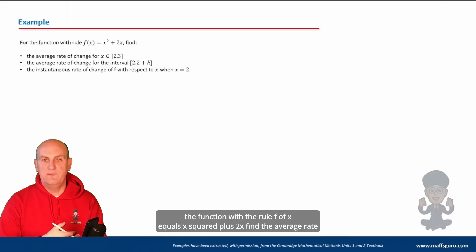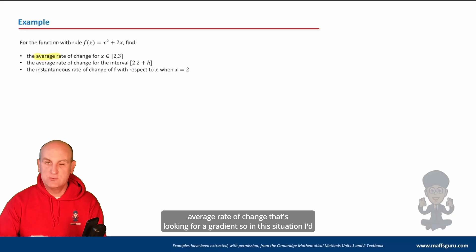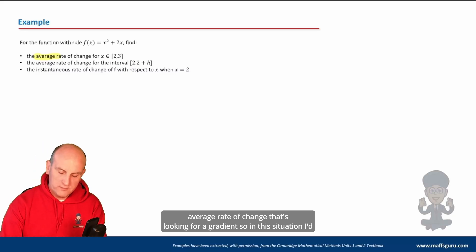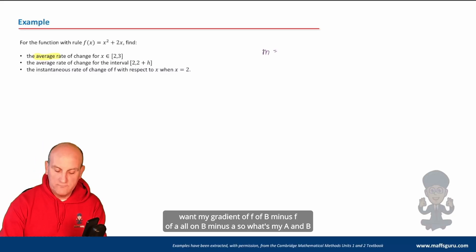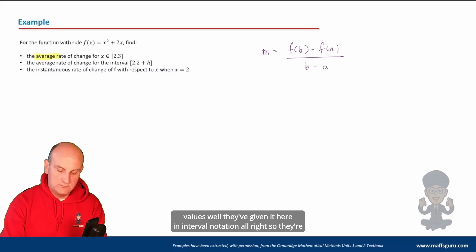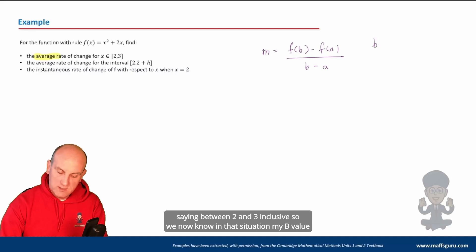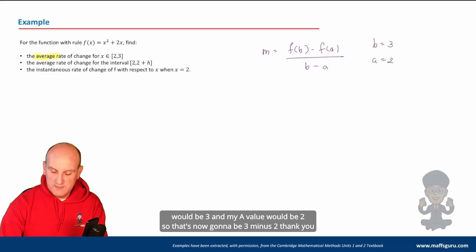With that in mind, let's look at some questions. For the function f(x) equals x squared plus 2x, find the average rate of change. I can see the average rate of change — that's looking for a gradient. So in this situation I want the gradient: f(b) minus f(a) all on b minus a. My a and b values are given in interval notation — they're saying between two and three inclusive.